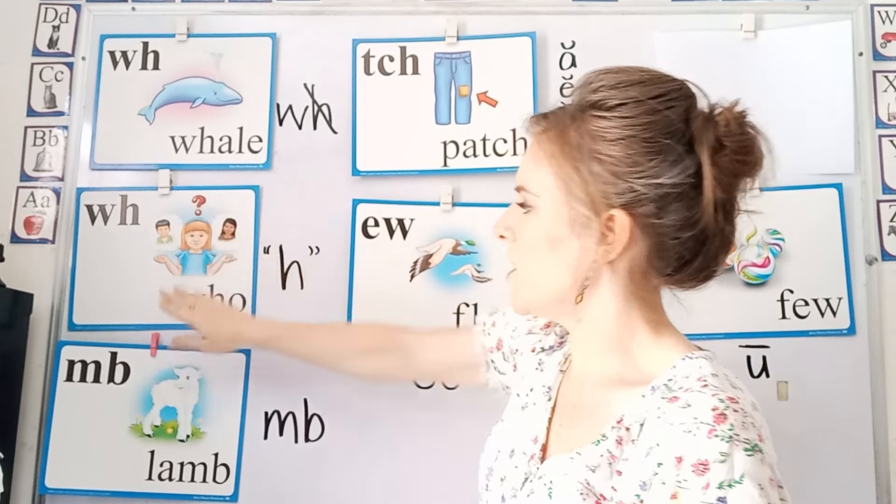Then we have the MB in lamb. The B is silent. We have the M sound in lamb, and the B is silent. So here we have limb, combed, thumb, crumbs, climes, and plumbing. The B is silent — it only makes the M sound.